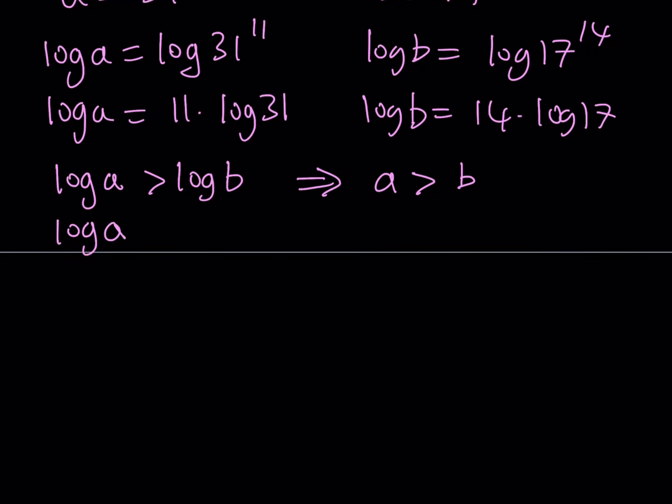On the other hand, if log A happens to be less than log B, then this implies A is less than B. So if I'm able to compare log A and log B, then I can easily compare A and B as a result. So that's one way to approach it, but obviously you're going to need to find the values of log 31 and log 17.